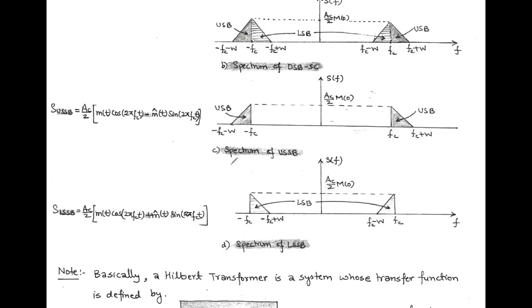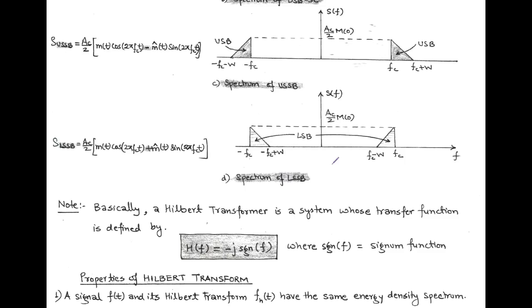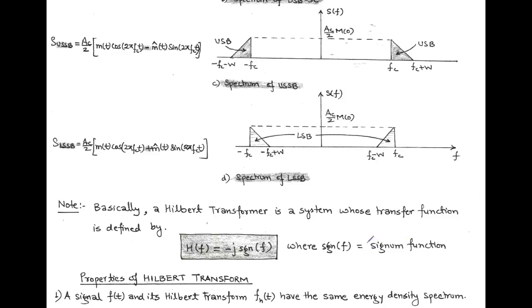Figure C is the spectrum of upper single sideband and figure D is the spectrum of lower single sideband. For the generation of single sideband, whether upper or lower, we use a Hilbert transformer. The Hilbert transformer is a type of wideband phase shifter, also called a system whose transfer function is defined by H(f) = −j·sgn(f), where sgn(f) is the signum function.